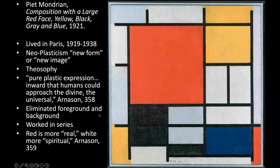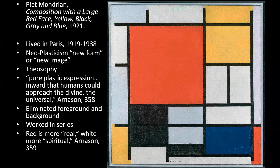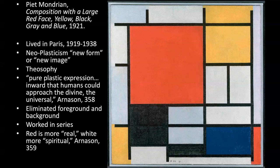Pure plastic expression — inward — that humans could approach the divine, the universal. Basically the same goal as the theosophists. He eliminated the foreground, the background — it's just flat, sitting right up on the canvas. Red is more real; white is more spiritual — again, a kind of emptiness or openness. You might think this is all kind of silly because of the simplicity of it, but if you've done the class discussion, you probably already realize the power of this combination of images, especially this combination of colors.